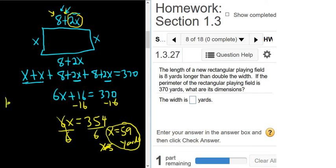To find the length, all you do is plug in the 59. So you do 8 plus 2 times 59. You plug in the 59 for your x up here. And putting this in the calculator, 8 plus 2 times 59, you end up with 126 yards. So that would be your length.